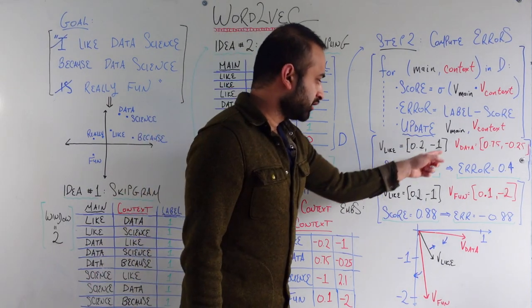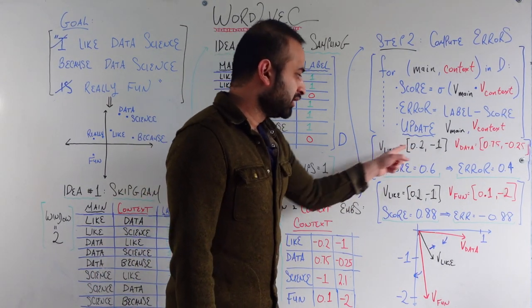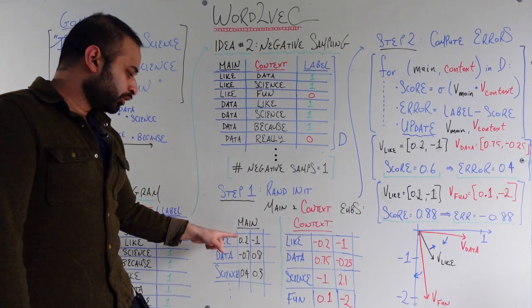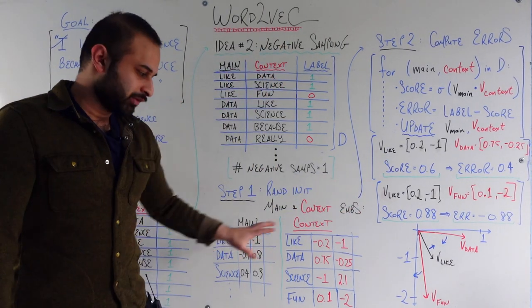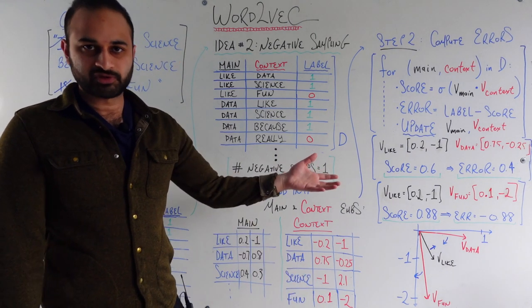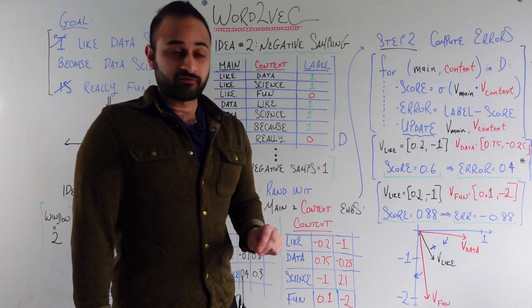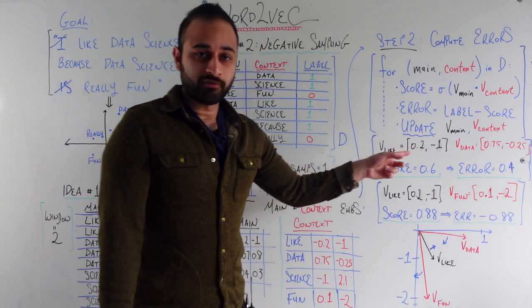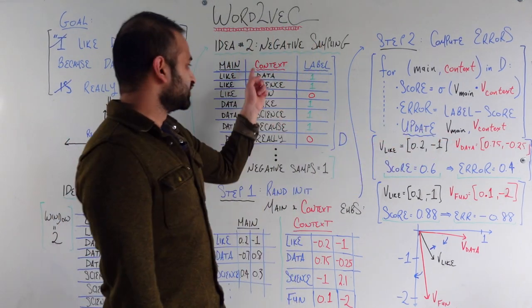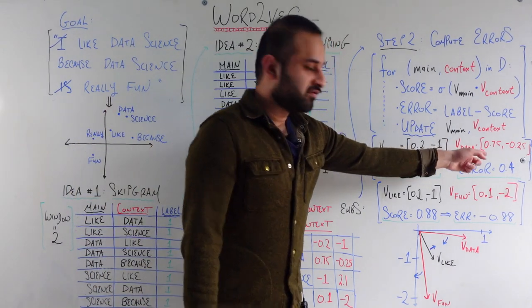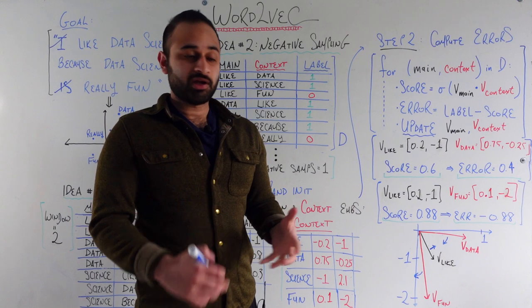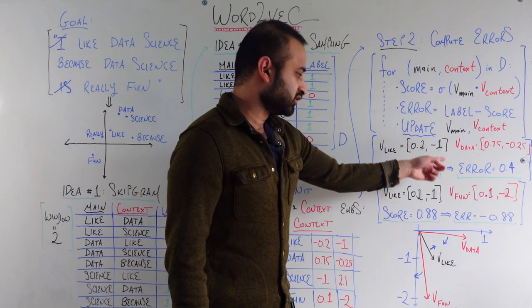So we take the current main embedding for 'like', which is [0.2, -1] — randomly initialized values we'll update through this process — and the current context vector for 'data', which is [0.75, -0.25]. We take their dot product, feed it into the sigmoid, and get a score of 0.6.